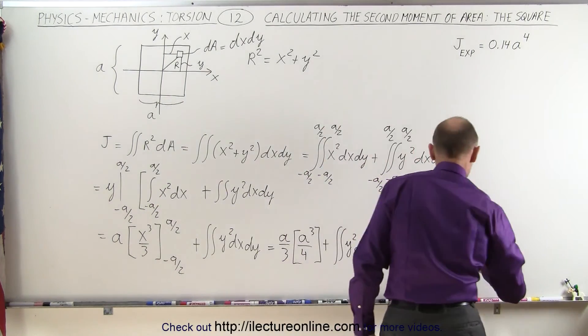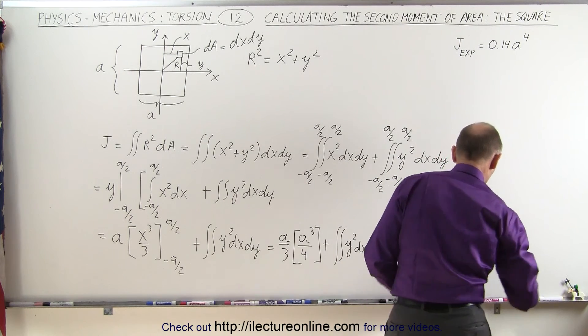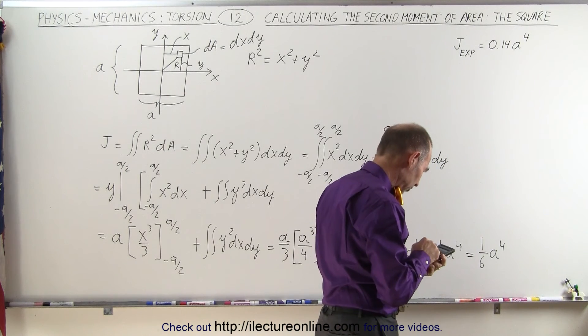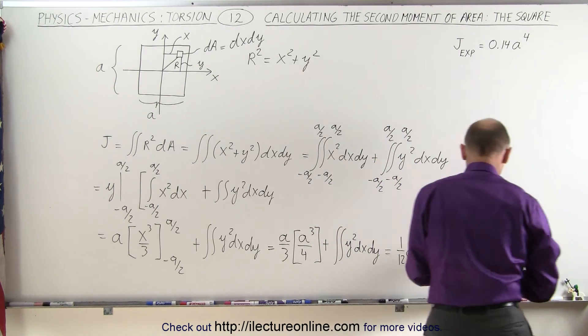So combine that, you get equal to 1 sixth a to the fourth, and if we then solve for 1 divided by 6, just to get a decimal value there, we get 0.167.